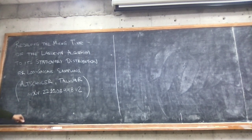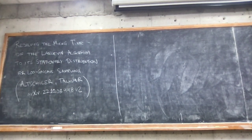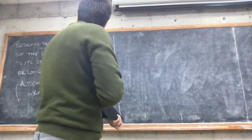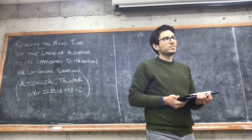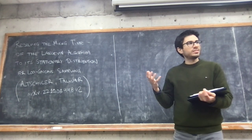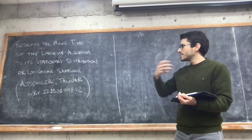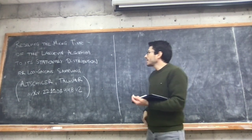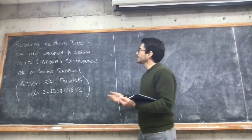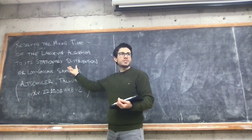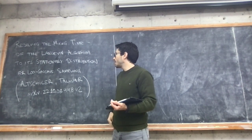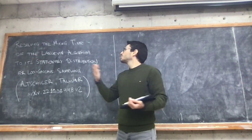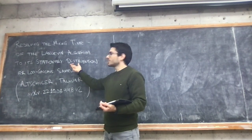Today we'll be covering this remarkable paper by Altshuler and Talwar, 'Resolving the Mixing Time of the Langevin Algorithm.' It's a fairly new paper, and what I think is very nice about this result is that it simplifies a lot of what has been done in other papers to establish convergence of the Langevin Algorithm. In particular, by focusing on the convergence of the discrete iteration to its own stationary distribution rather than thinking about convergence to the stationary distribution of the Langevin diffusion.